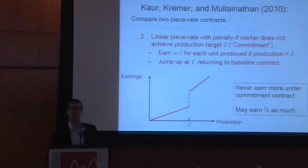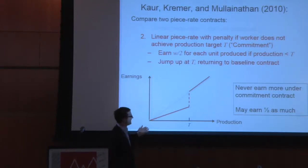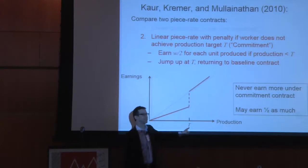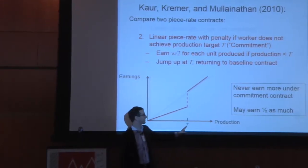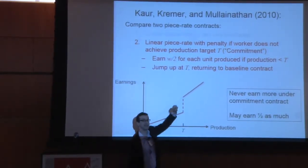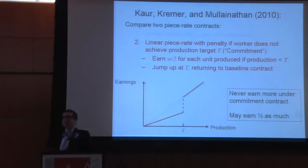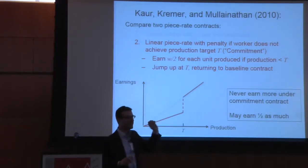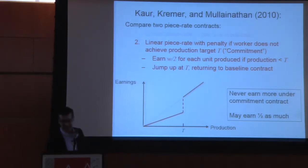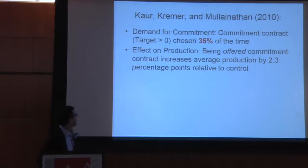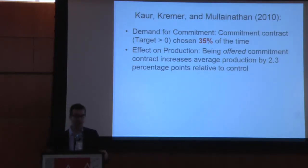There's a paper by Cowher, Kramer, and Mullenathan where they do something totally counterintuitive. They go to an Indian piece-rate factory and tell workers: we'll pay you half your normal wage up to a target level of production that you pick, and then if you reach your target, we'll pay you a lump sum and get you back on your old wage schedule. Despite the fact that this is a dominated pay schedule, 35% of individuals take it up and it increases production by 2.3 percentage points — equivalent to a very large pay increase, and essentially free for the employer.